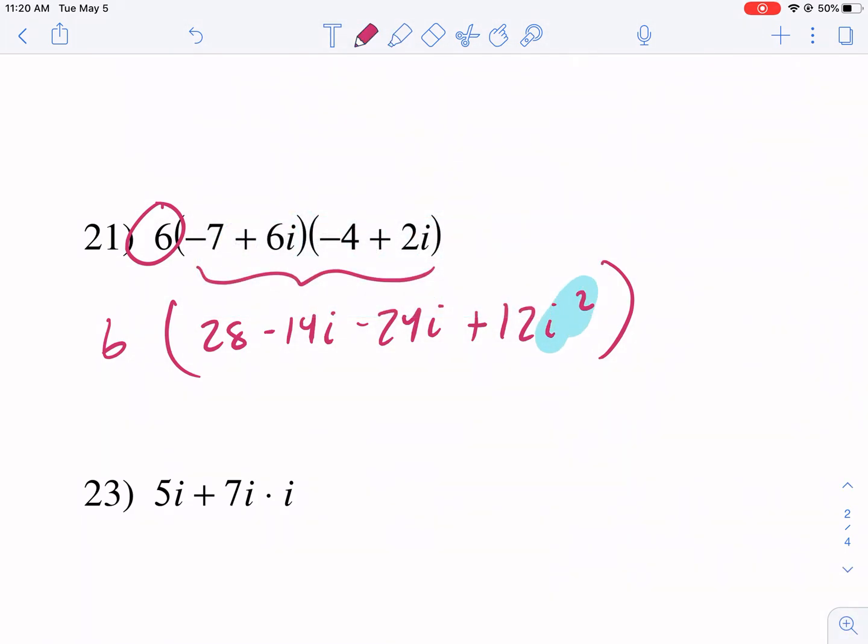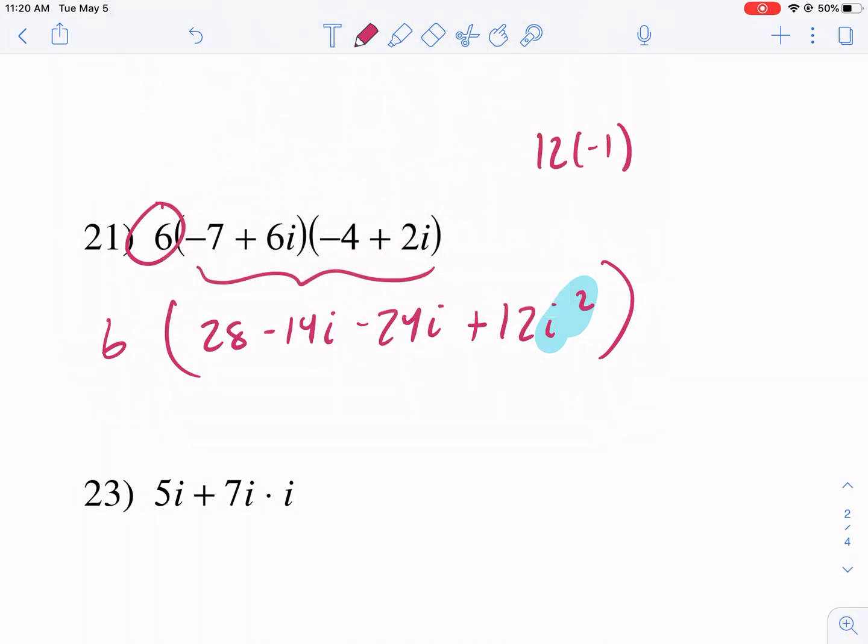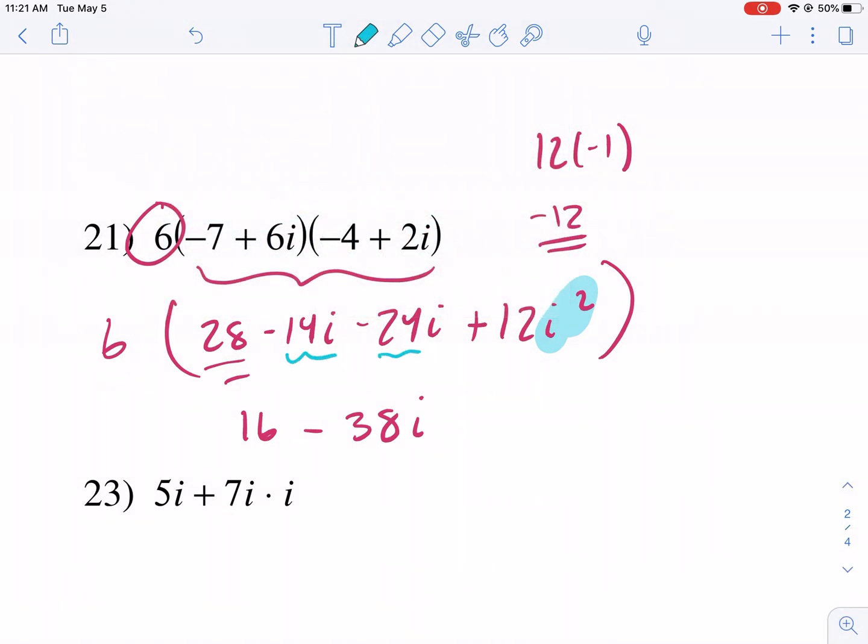That's going to turn it to a -1. So that's going to be 12 times a -1. That's going to give us a -12. 28 combined with -12, that should give us 16 minus, and then we're going to have 38i. It's not i squared because we're not multiplying. We're just combining like terms here.